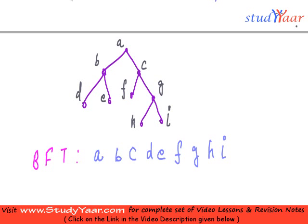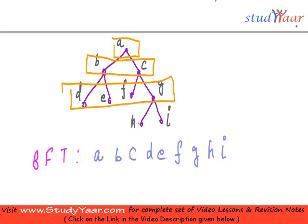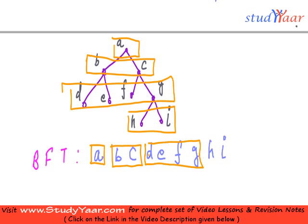To make it easier to understand, let me show the levels clearly. You have D, E, F, G at one level and finally H and I. So the processing order is: first A, then B, C, then D, E, F, G, and finally H and I. That is the order of processing nodes in a breadth-first traversal.